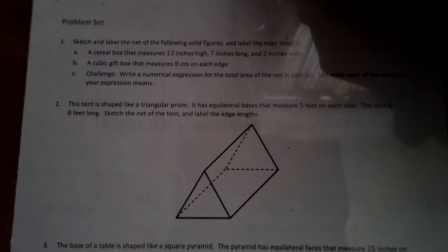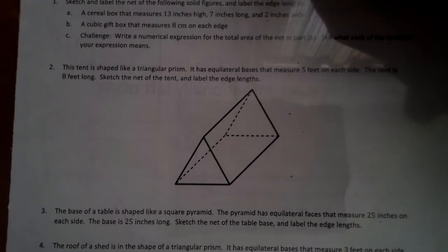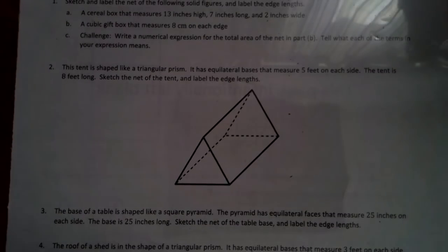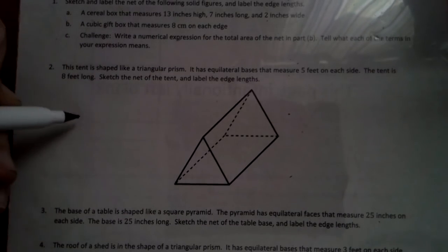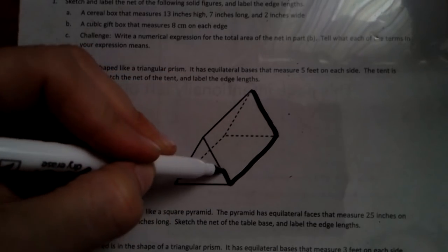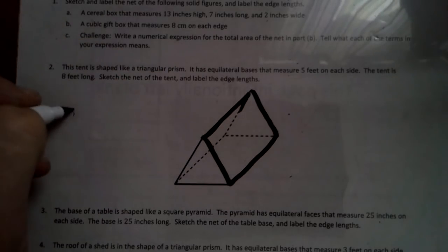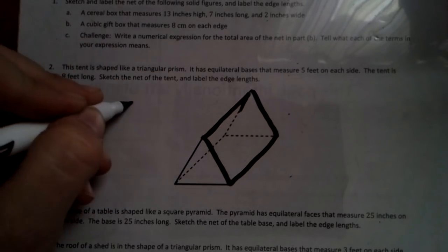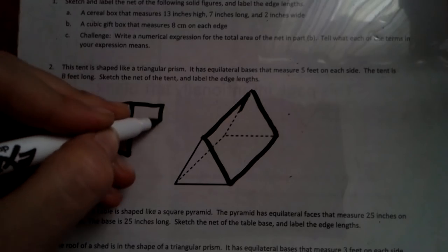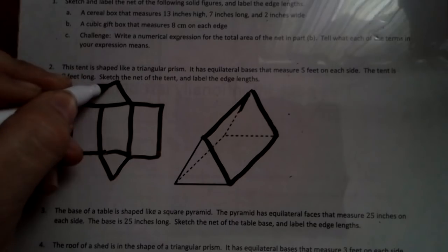So this tent is shaped like a triangular prism. So the triangular prism has these rectangle faces. We've got a rectangle here. We've got a rectangle on the side and we've got one more. So we've got three rectangular sides. And then we have two end caps that are triangular.